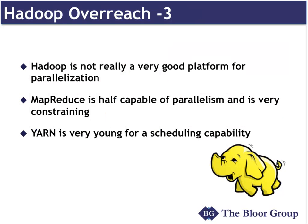Another point worth making in terms of Hadoop overreach: it's not a very good platform for parallelization. What it's actually doing is taking a snapshot regularly on every server as it executes its MapReduce jobs. If you were going to design for really fast parallelization, you wouldn't be doing that. MapReduce is only half capable of parallelism — there are two approaches: pipelining processes and dividing data. MapReduce only does the division of data, so there are many jobs where it wouldn't actually be the fastest way.